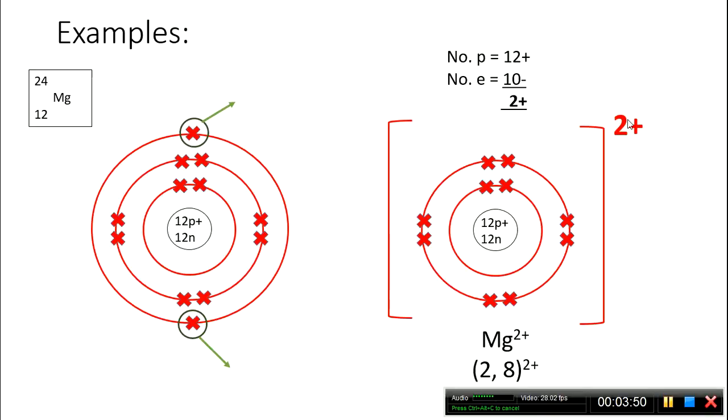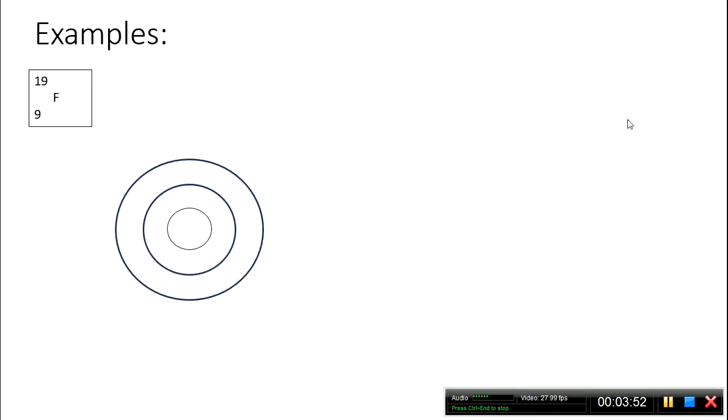So that's an example of a positive ion. Now let's look at a negative ion. So here's fluorine. Again, using the information in the periodic table, I can tell that there are 9 protons, that's the number at the bottom of the box, and 10 neutrons. That's the difference between the two numbers. I also know that there are 9 electrons, because the number of electrons equals the number of protons in an atom. So let's draw those in.